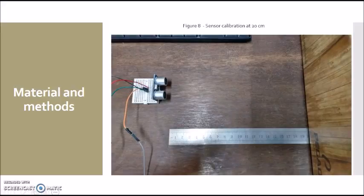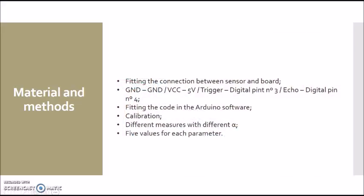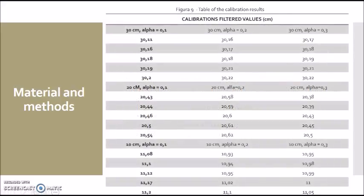This photo shows the calibration at 20 cm, where a reference ruler measured the distance between the sensor and the obstacle, a cardboard box. Measurements of 10, 20, and 30 cm spacing were made with alphas of 0.1, 0.2, and 0.3. For each of these combinations, 5 filtered values were chosen, and they were chosen by values that appeared most frequently in a period of time after stabilization, as shown in the table.